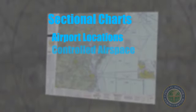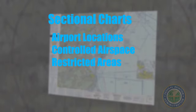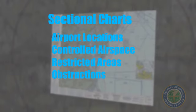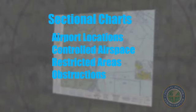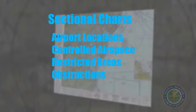Sectional charts include airport locations, depictions of controlled airspace, restricted areas, and obstructions. They cover a large area and are named according to the major metropolitan area within its boundaries.